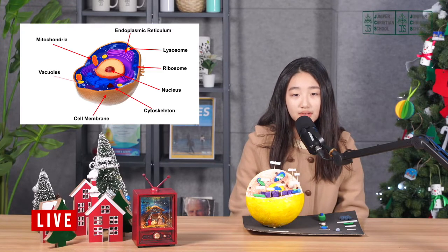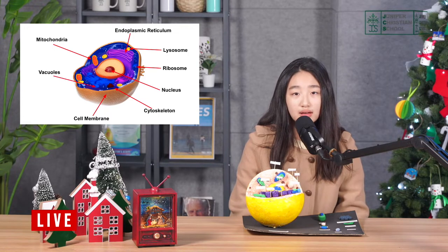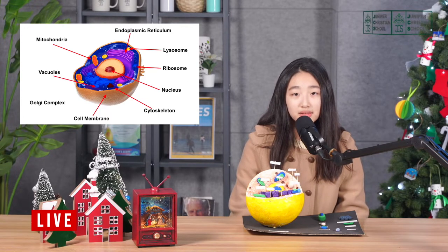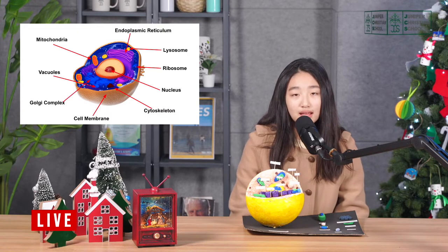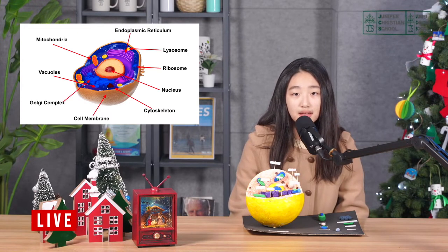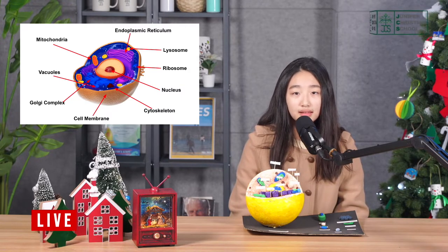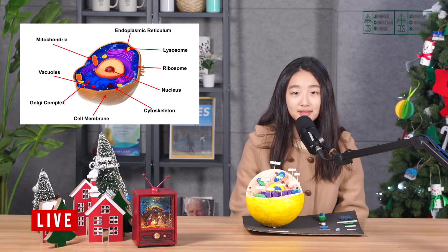Vacuole. Vacuole is the organelle where the animal cell stores water. Lastly, Golgi complex. Golgi complex is kind of like a post office that delivers materials in and out of the cell and around the cell.